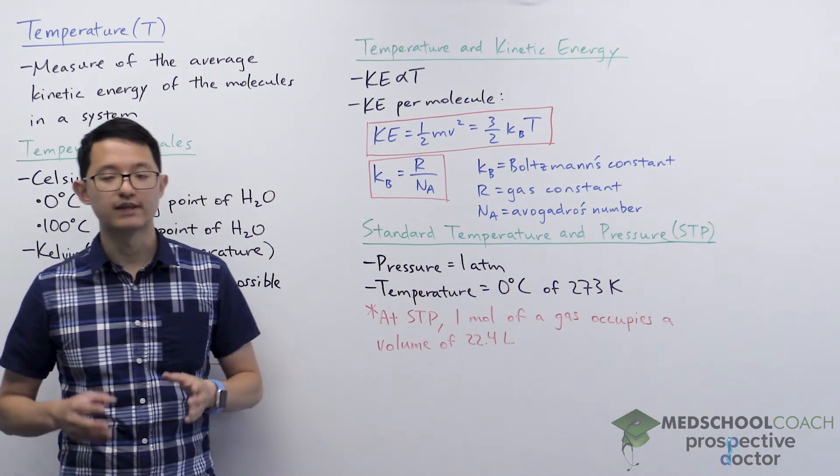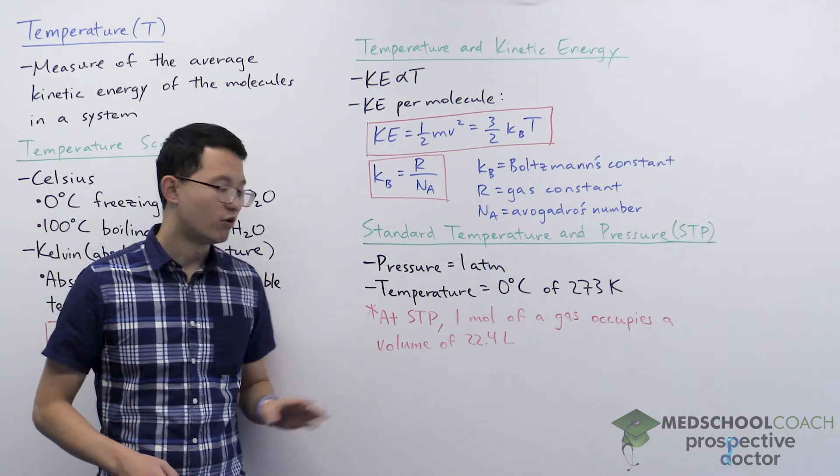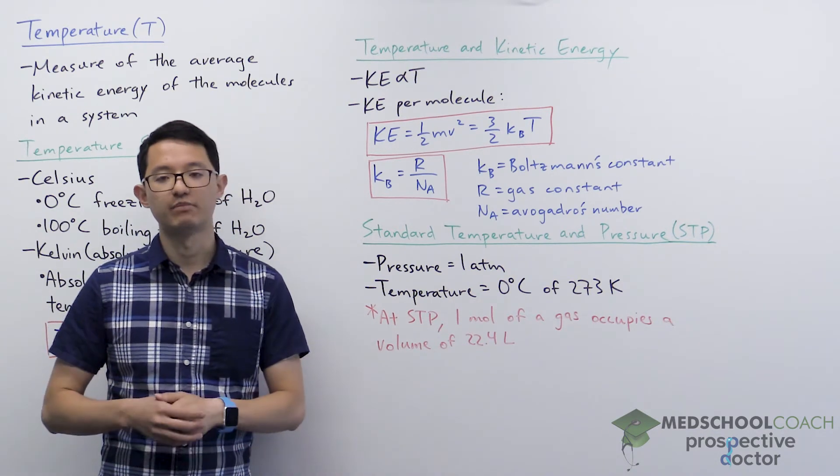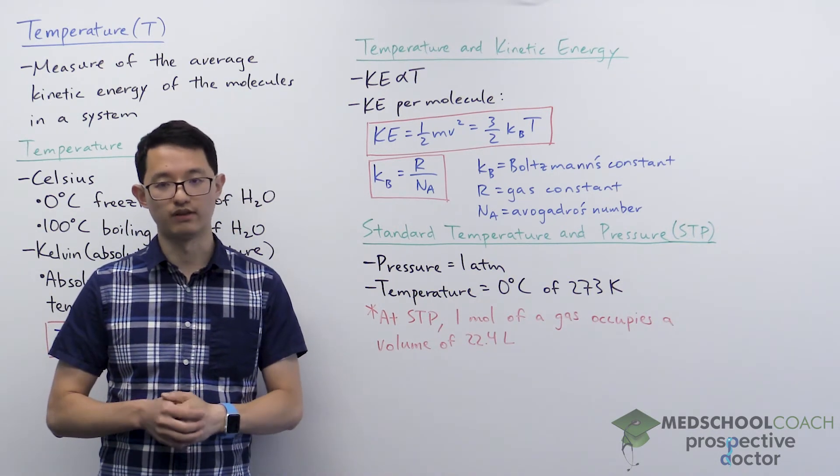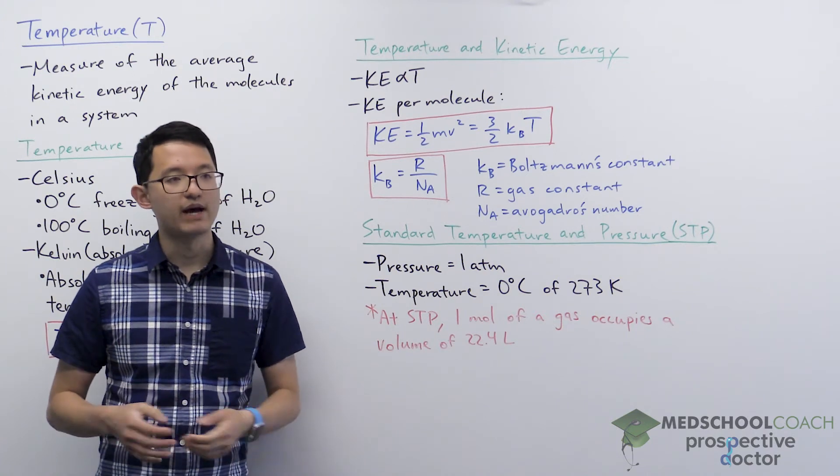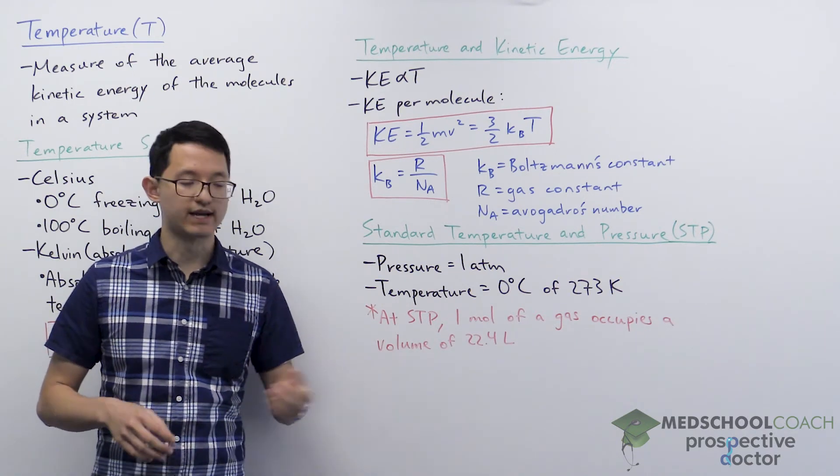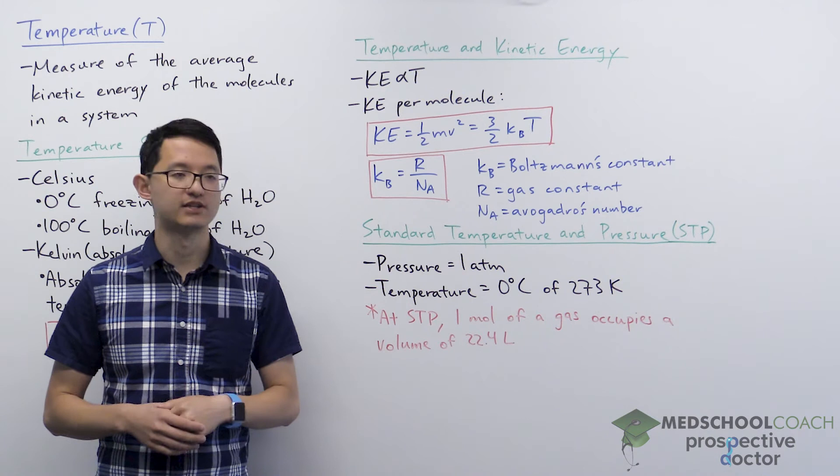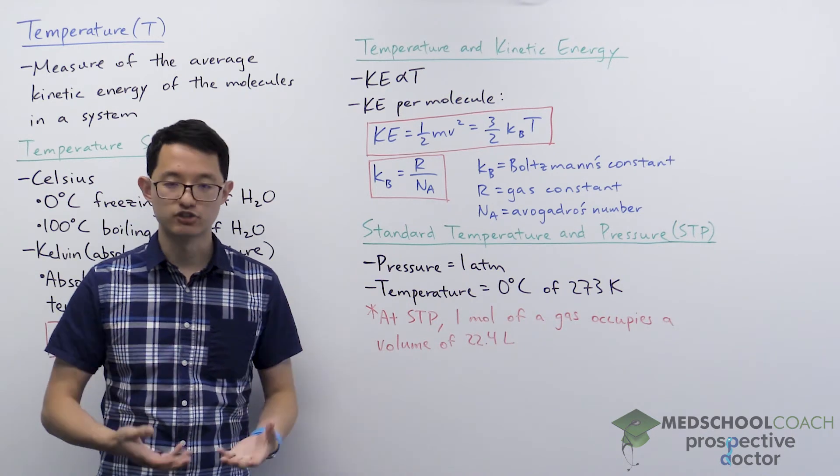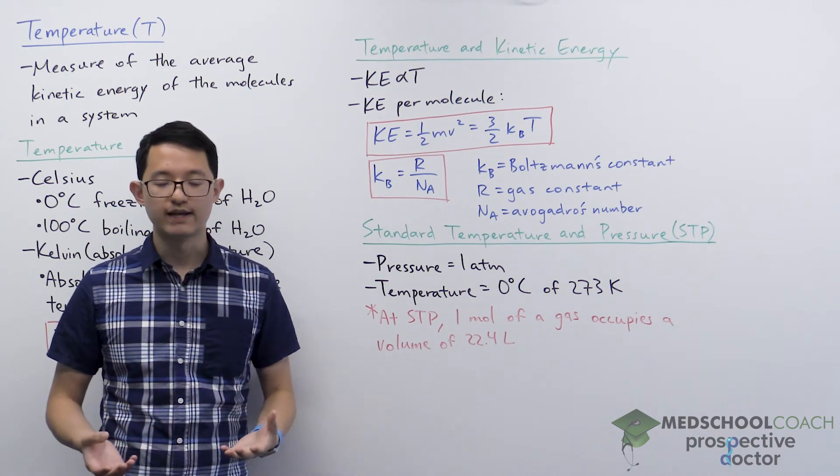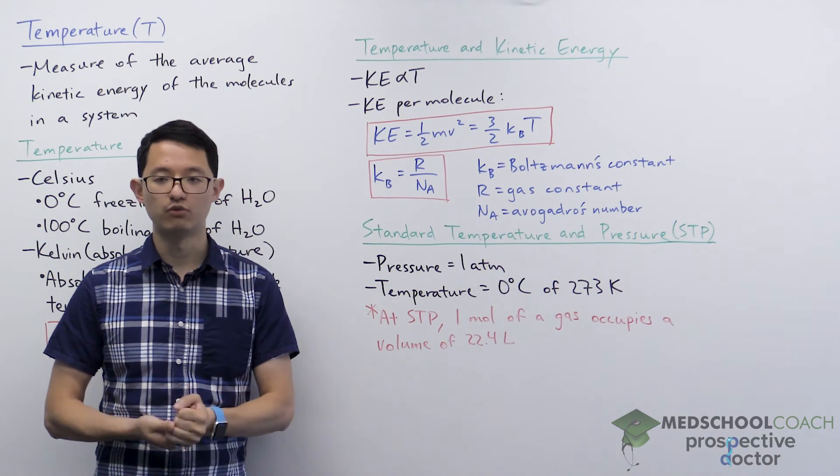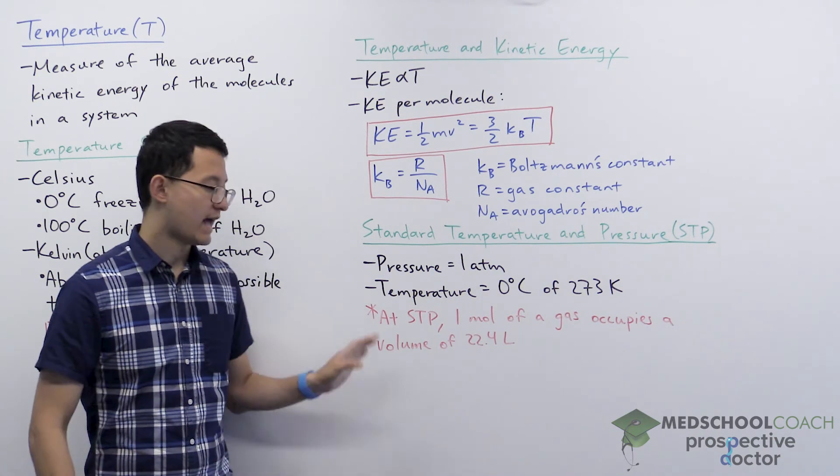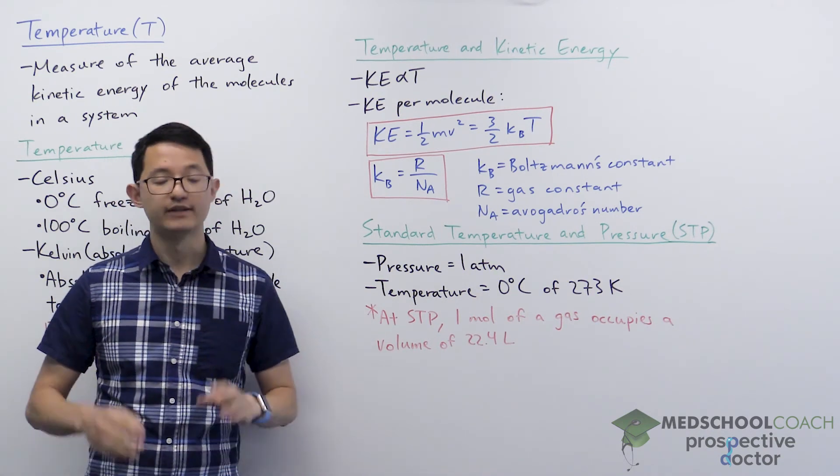You should know that at STP one mole of any gas occupies a volume of 22.4 liters. So it doesn't matter if it's a mole of hydrogen gas or a mole of neon gas or a mole of nitrogen gas. One mole of any gas will occupy a volume of 22.4 liters at STP.